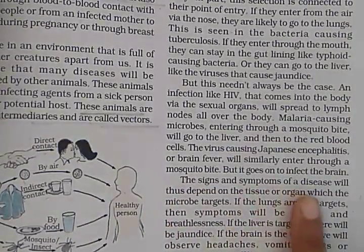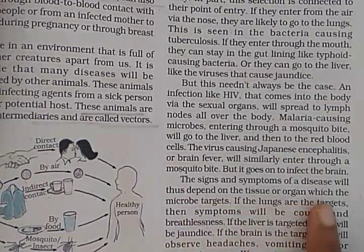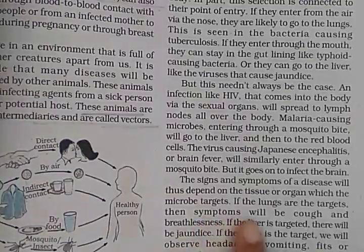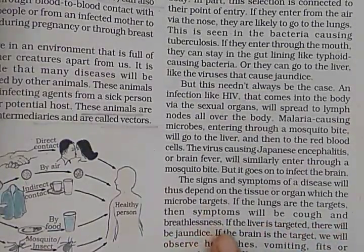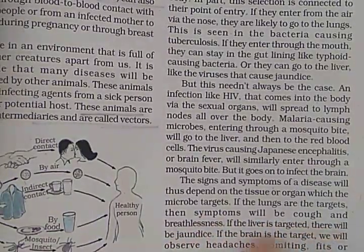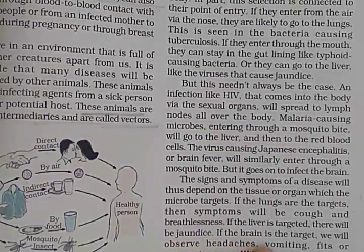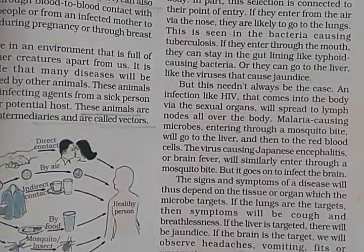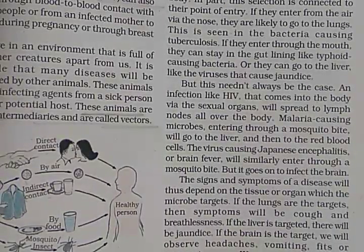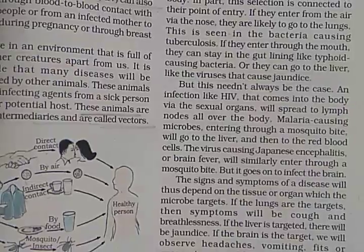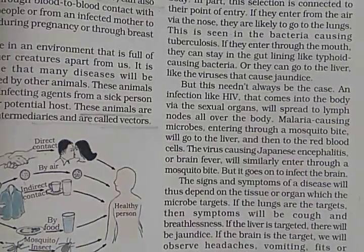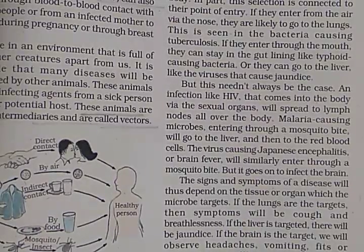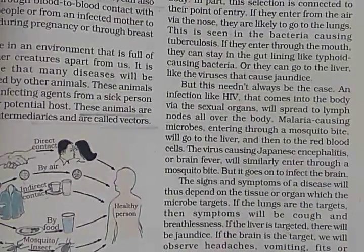The signs and symptoms of the disease will thus depend on the tissue or organ which the microbes target. If the lungs are the target, then symptoms will be cough and breathlessness. If the liver is the target, there will be jaundice. If the brain is the target, we will observe headache, vomiting, and other consequences. We can predict the symptoms and signs of an infection if we know what the target tissue or organ is and the functions carried out by that tissue or organ.